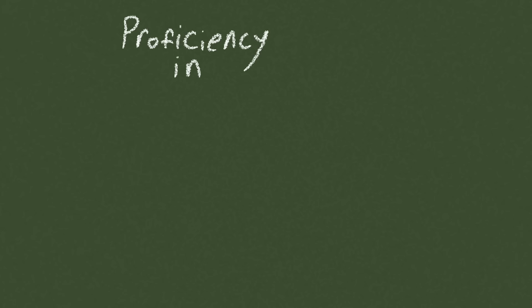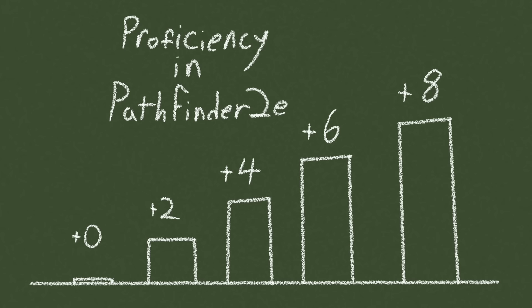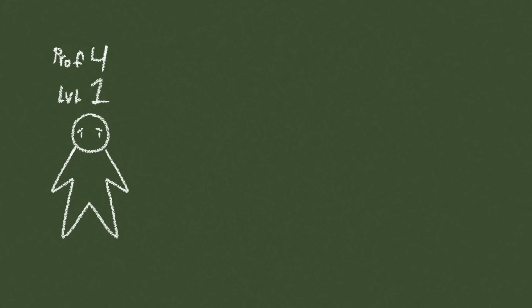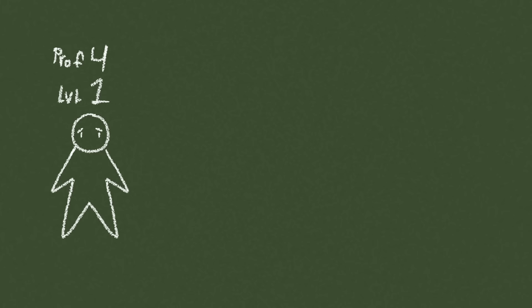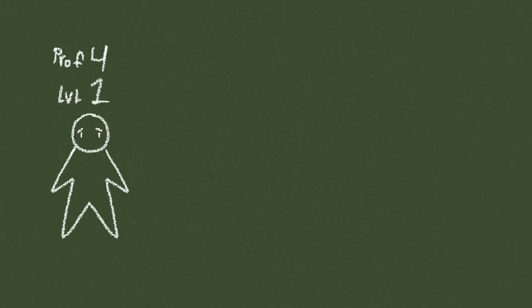So, how does Pathfinder 2nd Edition change this? Very quickly. Proficiency in Pathfinder is tiered, meaning you can be more or less proficient in something, regardless of level. However, the real kicker, and what changes the game, when you are proficient in something, you add your level to it. Meaning, every time you level up, you are getting measurably better at the things you are good at.